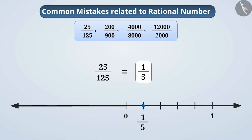Now, as you can see, it is easier to represent 1 by 5 than to represent 25 by 125 on the number line. Therefore, any rational number can be easily represented on the number line using its standard form.